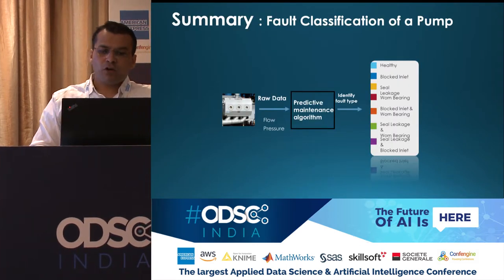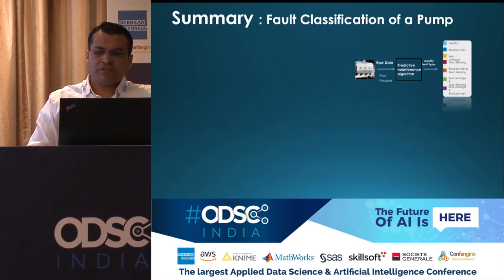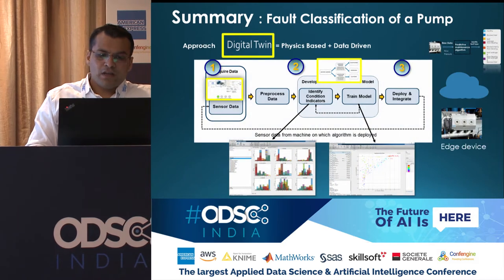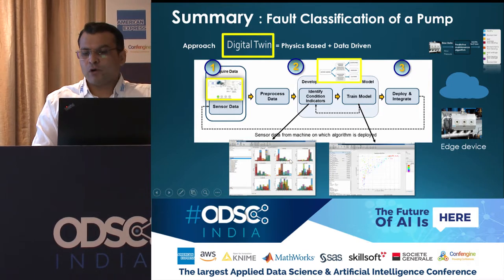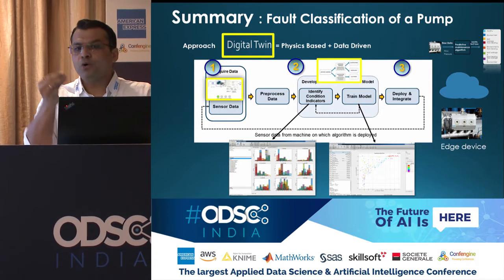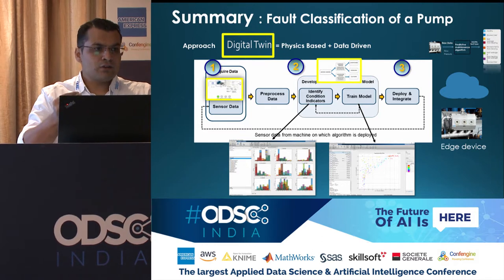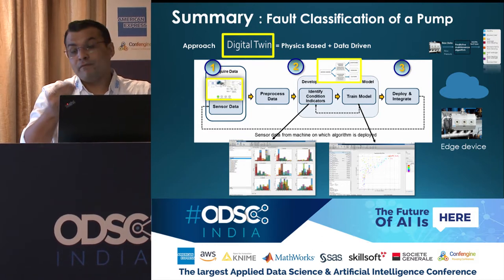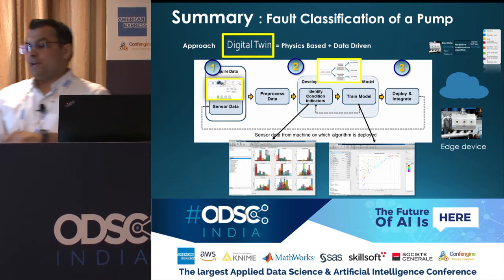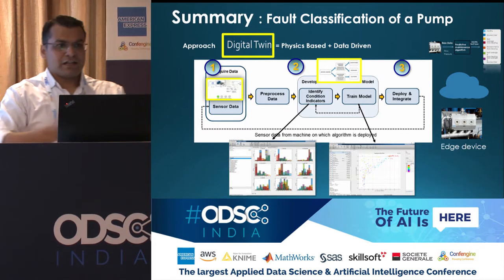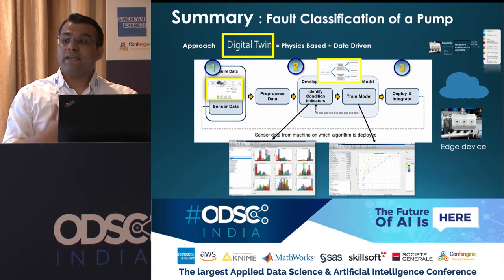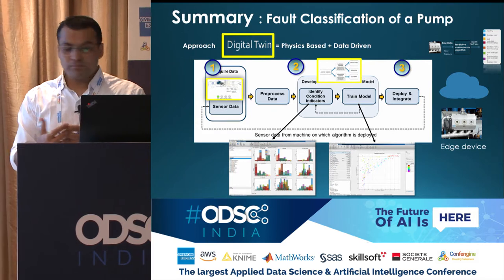Quick summary of what we have seen: we started with the problem, quickly summarized the generation part. The last piece also talked about how you decide your AI algorithm — where to take your AI algorithm — and we looked at that chart: how much time you have, how much time your AI algorithm has to act.